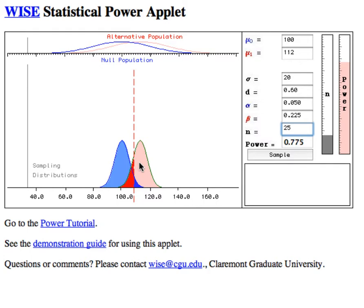and power is going to go up because more of this alternative distribution is going to lie to the right of the cutoff, symbolized by this red dashed line. And that indeed is what happens. Power goes up to almost 0.912.